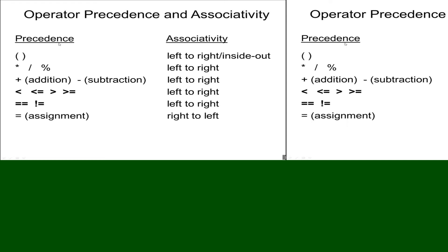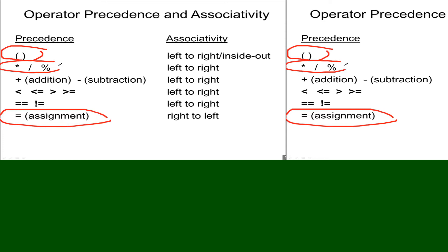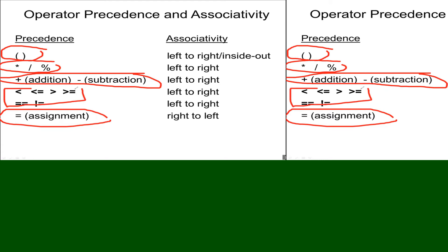Remember the precedence rules: parentheses are the highest priority, assignment is the last. Today we learned the relational operators — less-than, less-than-or-equal, greater-than, greater-than-or-equal come before equal-equal and not-equal. You must memorize this precedence table.